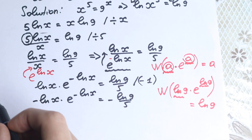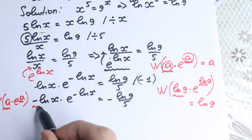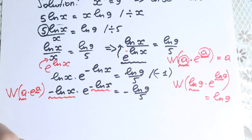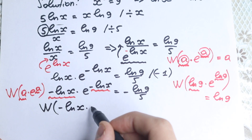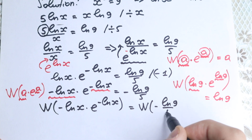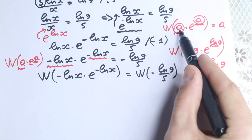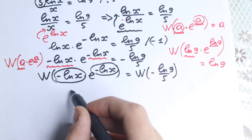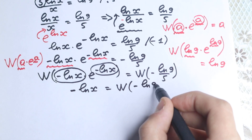Let's go back to our question. We have it looking like W(a·e^a), and we need the same expression on both sides. We apply the Lambert W function: W(−ln(x)·e^(−ln x)) = W(−ln(9)/5). According to the rule W(a·e^a) = a, the left-hand side simplifies to −ln(x). So we have −ln(x) = W(−ln(9)/5), which is a constant.